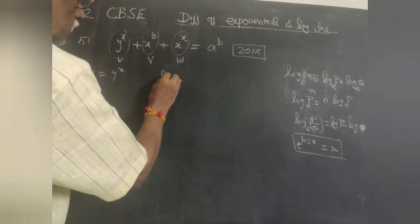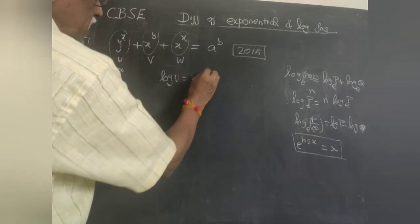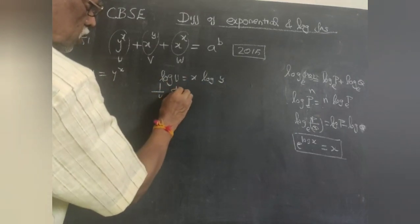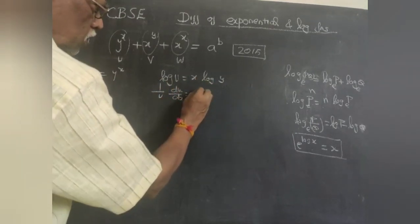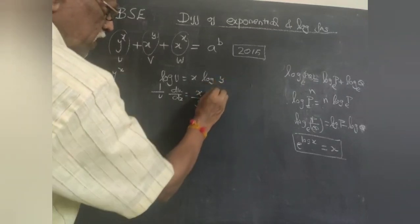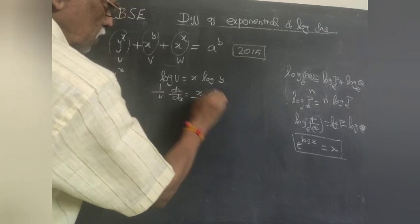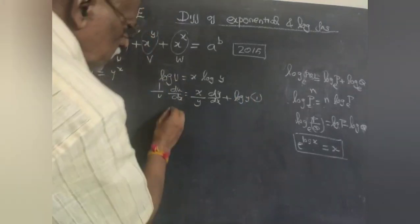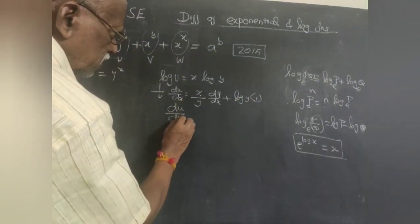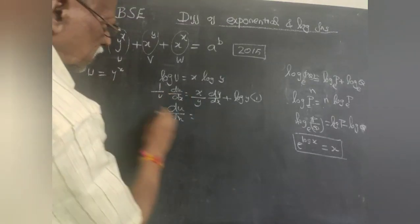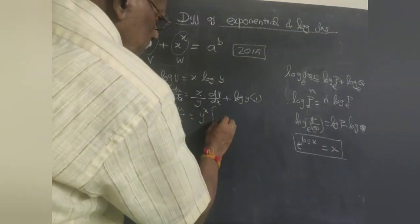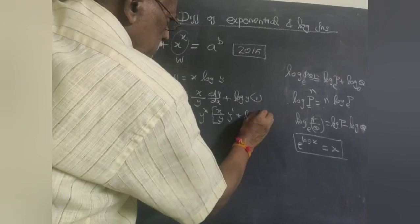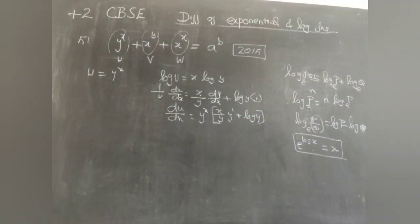For u = y^x: taking log on both sides, log u = x·log y. Differentiating: (1/u)·(du/dx) = x·(1/y)·(dy/dx) + log y. Therefore du/dx = y^x · [x·y'/y + log y].